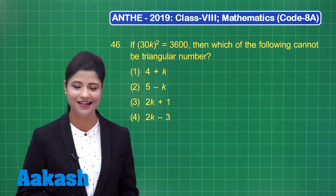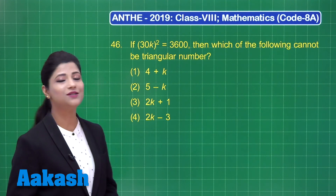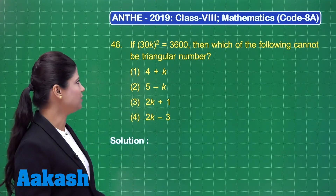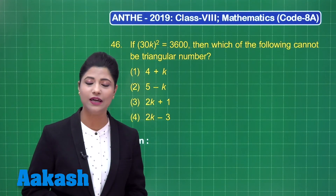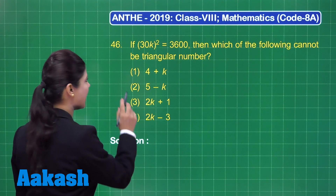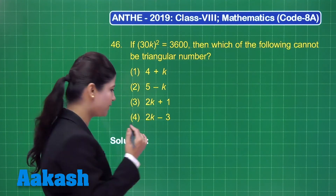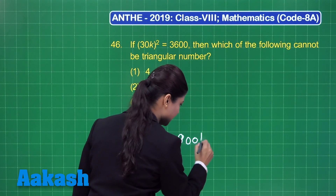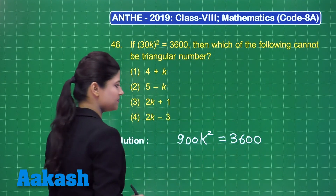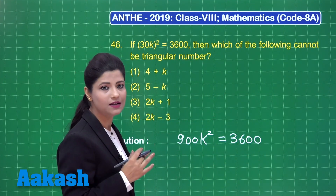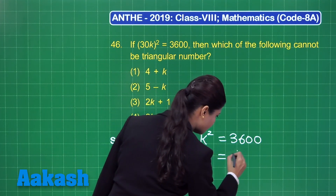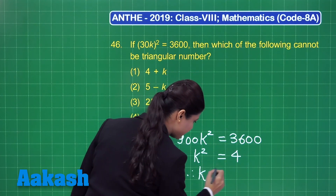The first question states that if 30K² = 3600, then which of the following cannot be a triangular number? We have four options. Using the given statement, I can obtain the value of K. Considering this: (30K)² = 900K² = 3600. Simplifying, the zeros cancel and 9 reduces 36 four times, giving K² = 4.